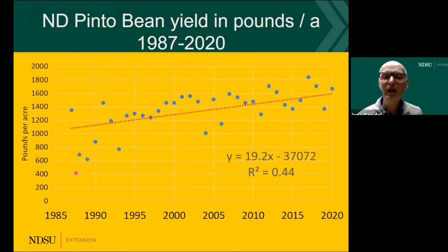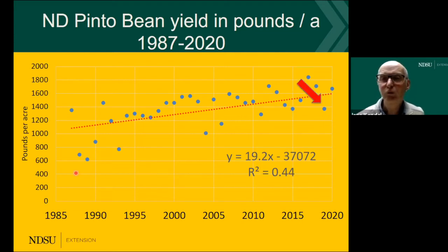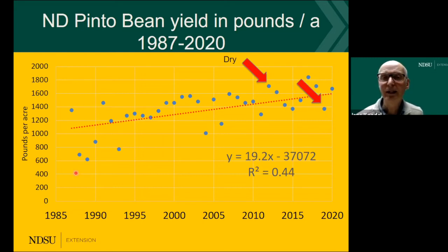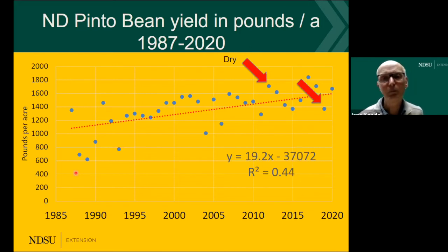Now looking at pinto bean yield over the same period — same format — I'm going to focus on some individual points. The 2012 was the dry year and 2019 was the wet year. It looks like drier years tend to be higher yielding, probably because we have less disease development in a drier year.